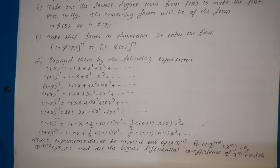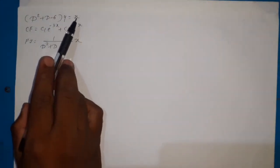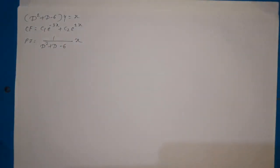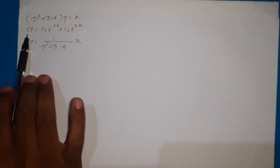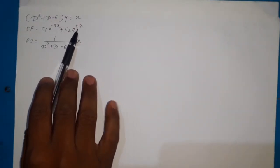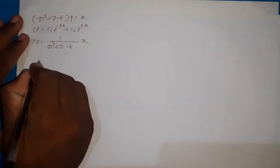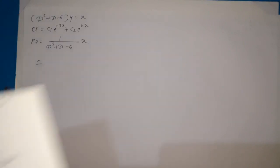Let us discuss some examples — by looking at examples, this theoretical method will become easier. Consider the first example: solve the equation (D² + D − 6)y = x. From now on I will write the complementary function directly, since we have already solved many examples on complementary functions — how to find the roots and how to write the CF. So the complementary function is C₁e^(−3x) + C₂e^(2x), meaning the roots are −3 and 2. Now for the particular integral.